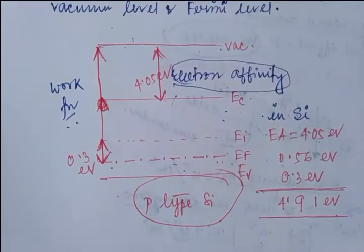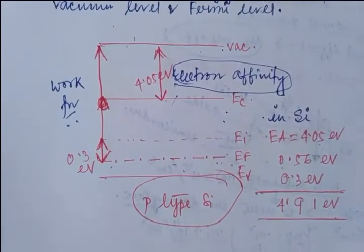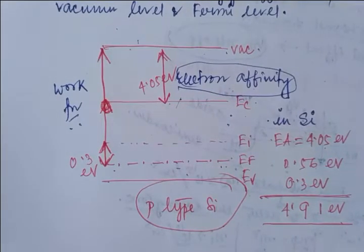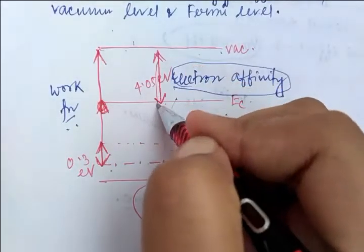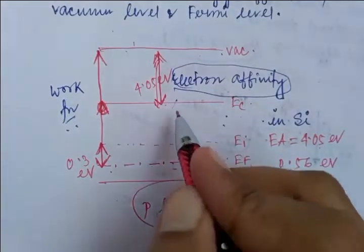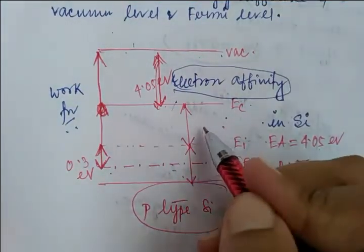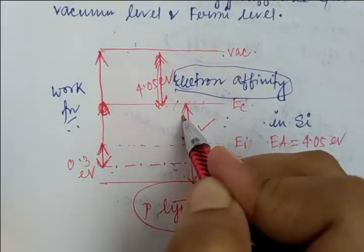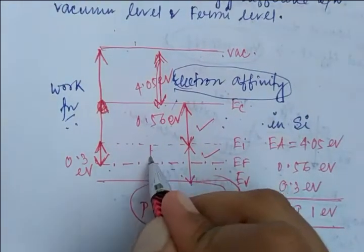You have now learned the concept of work function and electron affinity — why it is needed and how to calculate the work function for p-type or n-type semiconductors using general values at room temperature. For electron affinity in silicon the value is 4.05 eV, half the band gap energy is 0.56 eV, and this is the total band energy split into two halves.